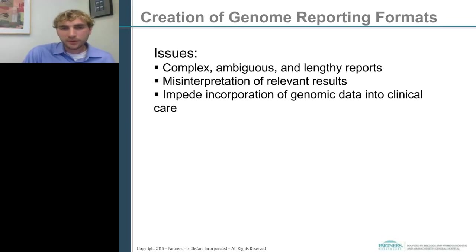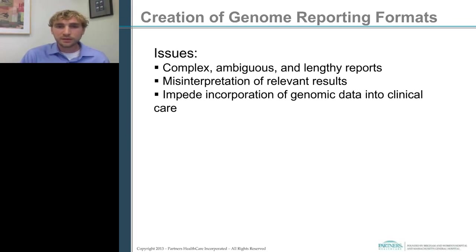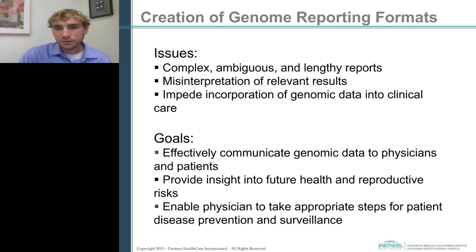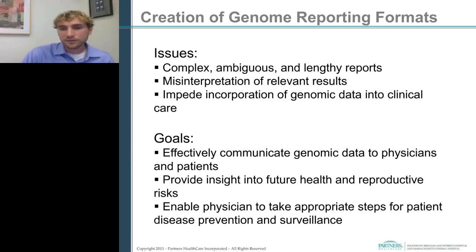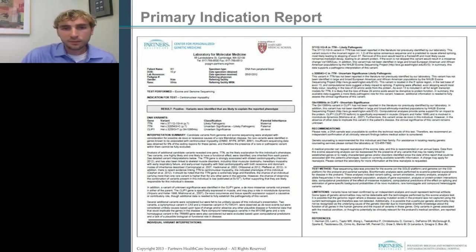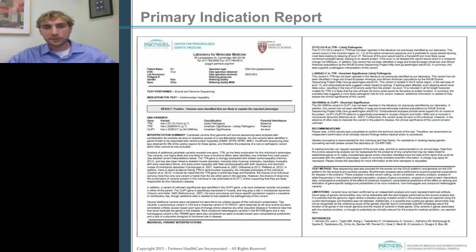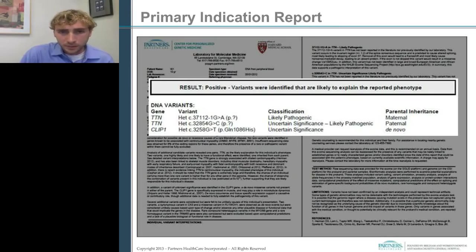For the creation of the genome reporting process, reports can be complex, ambiguous, and potentially lengthy, with a risk of misinterpretation of relevant results. Their complex nature could impede the incorporation of genomic data into clinical care. You want to create reports that effectively communicate data to clinicians and patients, help provide insight into future health and reproductive risks, and enable the physician to take appropriate next steps. This is a quick view of our primary indication report — it's text-based today, though things may need to shift to a more tabular format. The first focus is listing the most likely relevant variants identified, how we're classifying them, and parental inheritance information where available — particularly useful for de novo and recessive cases.